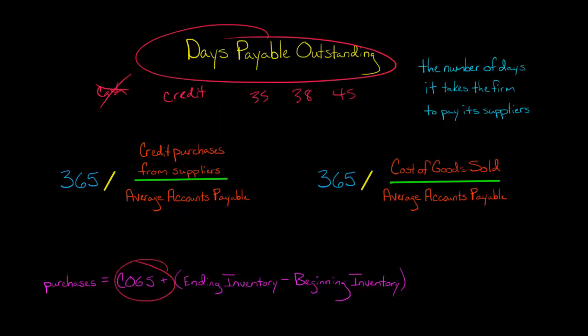Otherwise, it would be subtracted from cost of goods sold, right? If the beginning inventory exceeded the ending inventory.